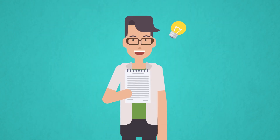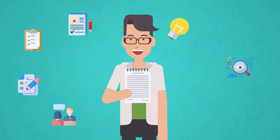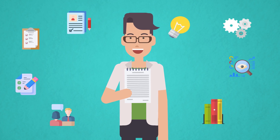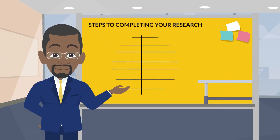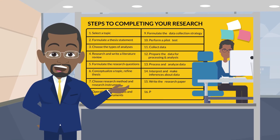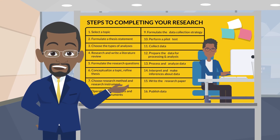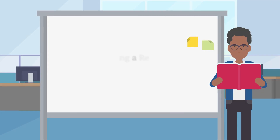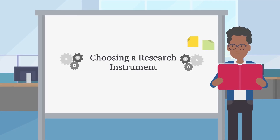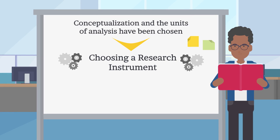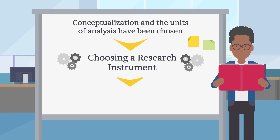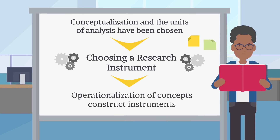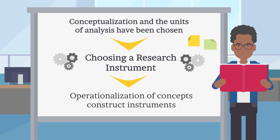The research instrument is usually determined by the researcher and is tied to the study methodology. Choosing a research instrument should be done after conceptualization and the units of analysis have been chosen, and before operationalization of concepts and constructing instruments.